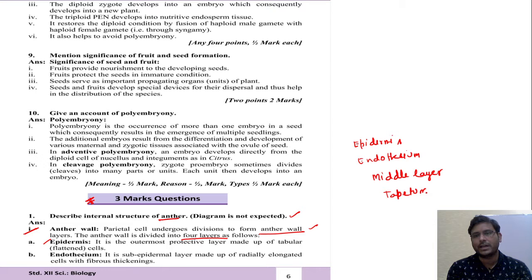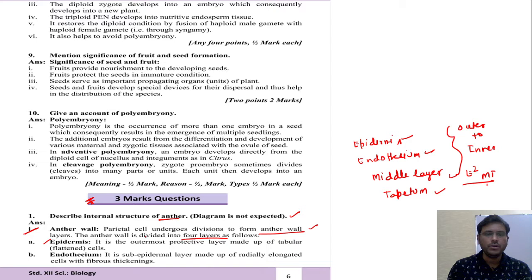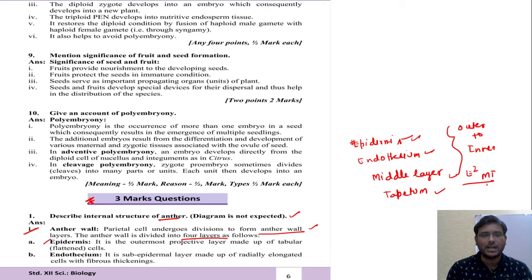This is the outer-to-inner sequence. You can remember the mnemonic E-squared MT: E for epidermis, E for endothecium, M for middle layer, and T for tapetum. Epidermis is the outer layer. Endothecium is the sub-epidermal layer — below the epidermis — made up of readily elongated cells with fibrous thickening.